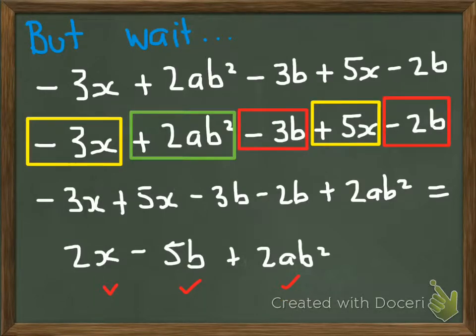But wait, there's more. Try a couple of these ones: 3x plus 2ab squared minus 3b plus 5x minus 2b. Whoa, sounds complicated, but it's not. Just put the boxes around it, rewrite the equation, and put it all together. If you follow my working here, you'll end up with 2x minus 5b plus 2ab squared.